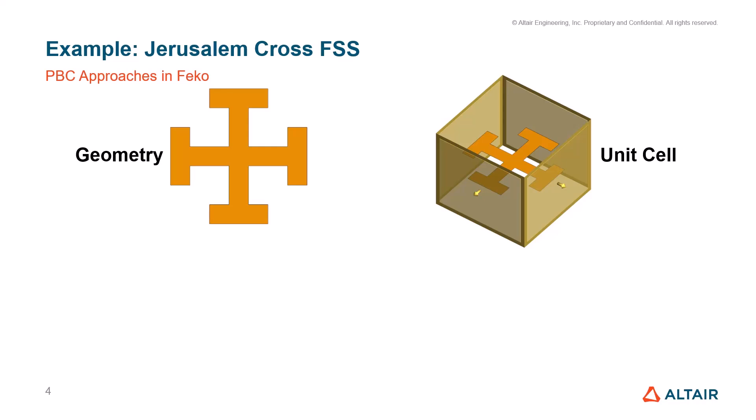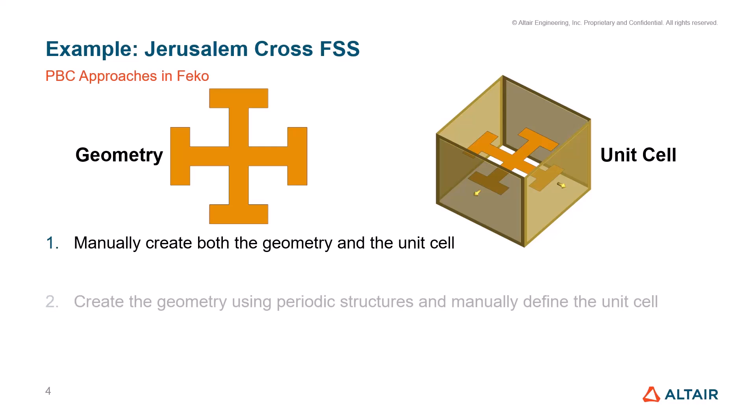The basic workflow does not change, but there are a few different approaches through which it can be implemented. The first is to manually create both the geometry used in the unit cell as well as the periodic boundary conditions to specify the size of the unit cell. The second approach is to use the predefined shapes under the periodic structures feature in FEKO to create the geometry.